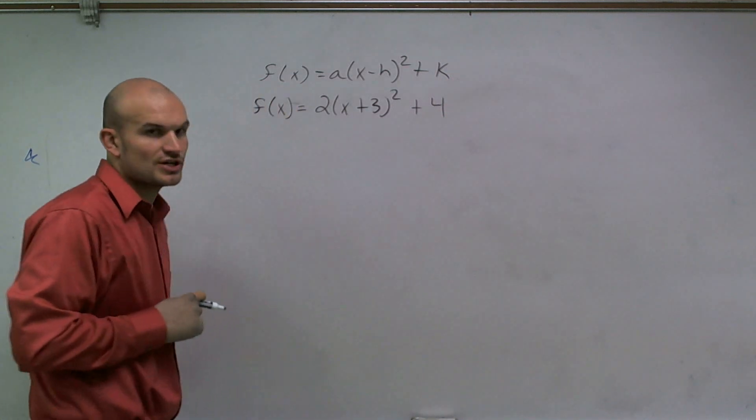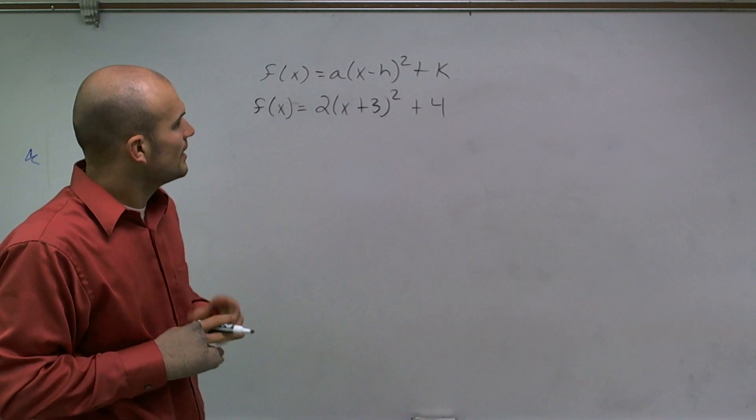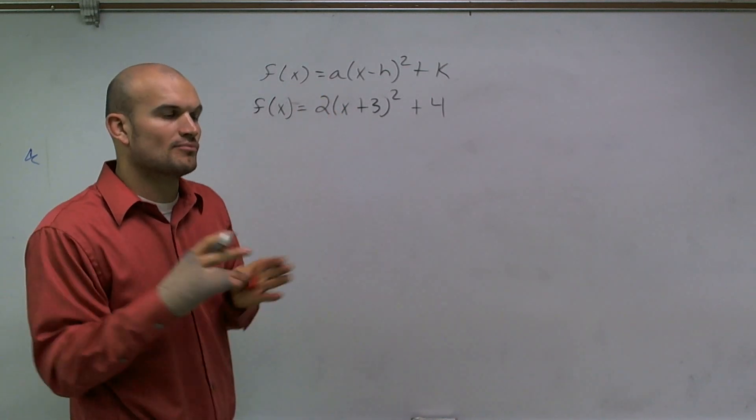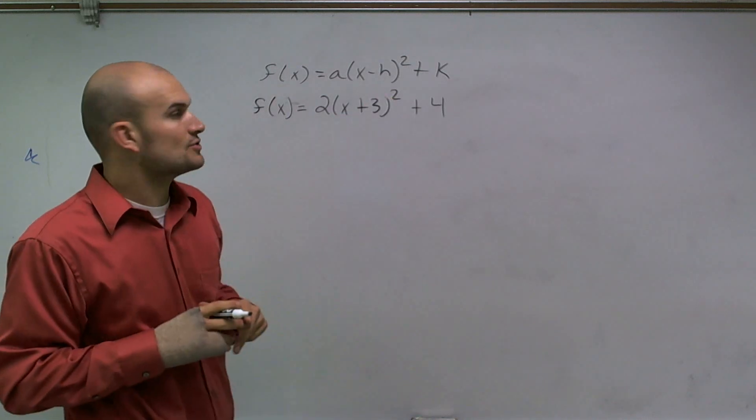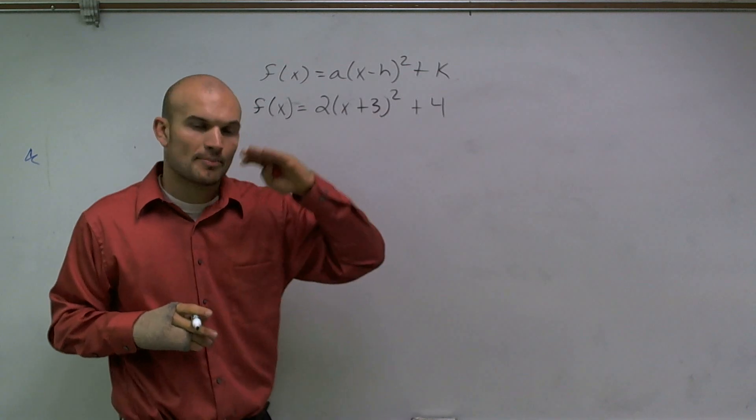All right. So here's a general form—actually we'll call it vertex form—of a parabola. And a couple of things we need to know: A is going to determine how we're going to stretch or compress our graph. H is going to determine our shift left or right. And K is going to determine our shift up or down.